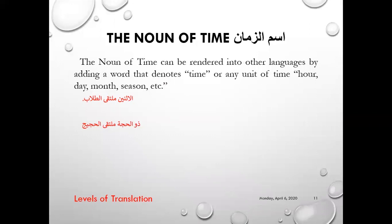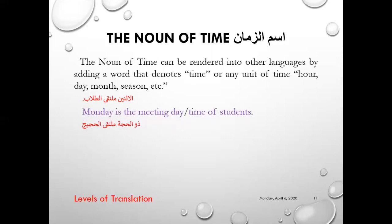Now we'll come to the noun of time, 'ismul zaman.' The noun of time can be rendered into another language by adding a word that denotes time, just as we did with the noun of place. We can use the word 'time' or any unit of time — hour, day, month, season — next to the base form. For example, 'al-ithnayni multaqa al-tolaab' — 'Monday is the meeting day of students.' Another example: 'Dhul-hijja multaqa al-hajij' — 'Dhul-hijja is the meeting time or month of pilgrims.' So in this way we can translate any form for which we have no equivalent in the target language.